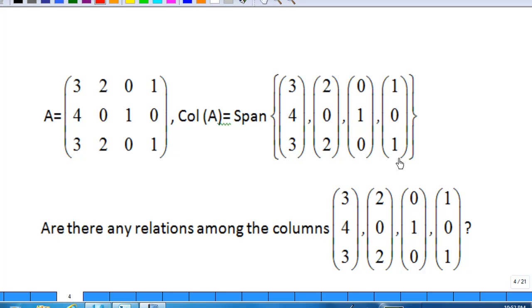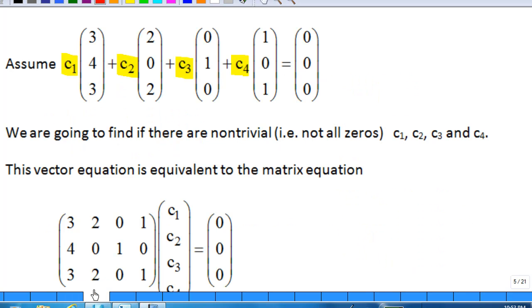Are there any relations among the columns? Suppose there are numbers C1, C2, C3, C4, not all zero, such that C1 times 3 4 3 plus C2 times 2 0 2 plus C3 times 0 1 0 plus C4 times 1 0 1 equal to 0 0 0. How are we going to find this C1, C2, C3, C4?